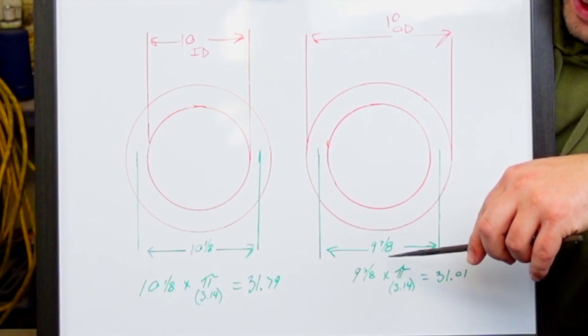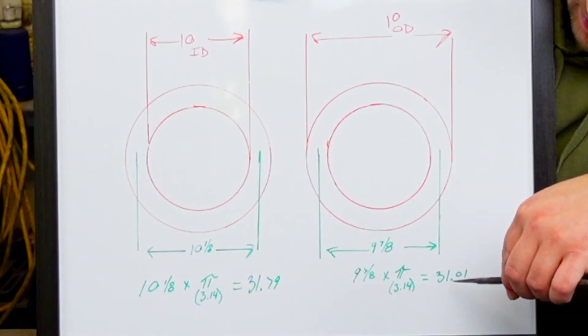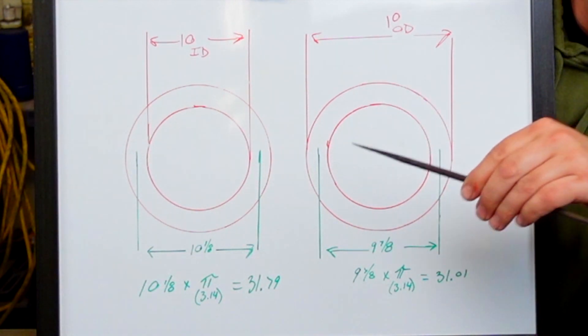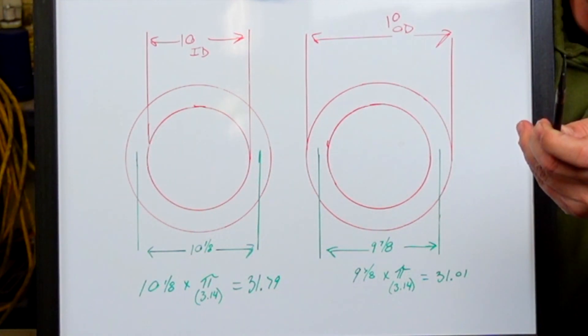So we'll go nine and seven eighths times pi equals 31.01. So we'll cut both of those out, we'll roll them and see how we did.